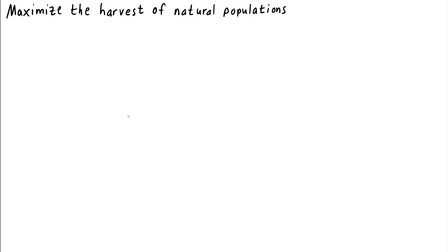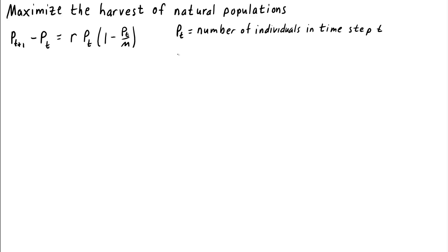Let's imagine we had a population of some species growing according to the discrete logistic equation. Here, P sub t is the number of individuals in time step t, r equals the low density growth rate, and m is the carrying capacity.